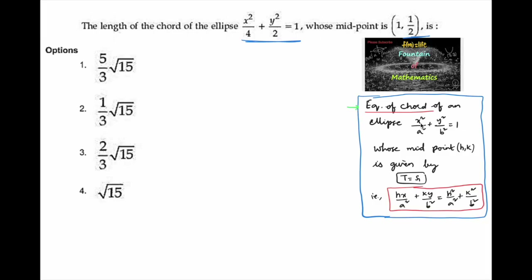We know that the equation of the chord of an ellipse x²/a² + y²/b² = 1, whose midpoint is given as (h, k), will be given by T = S1, that is hx/a² + ky/b² = h²/a² + k²/b².